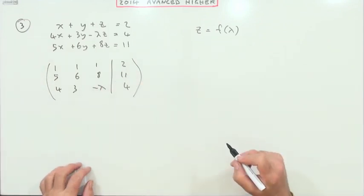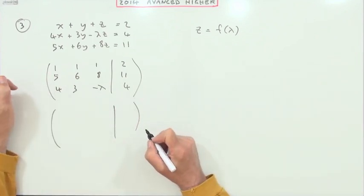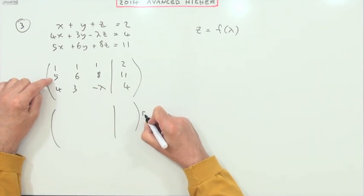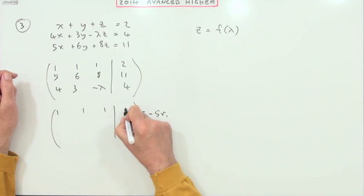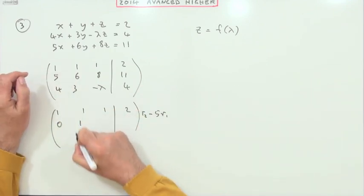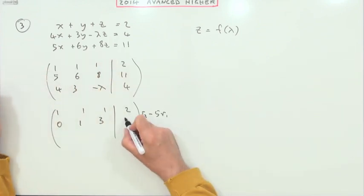Plan is to get both of them to zeros. So for this one, I'll take row two and subtract five lots of row one. One one one two, so I'll be a zero, six take away five will be a one, eight take away five will be a three, and eleven take away ten will be a one.